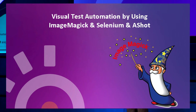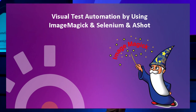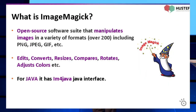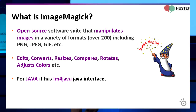The third solution is an open source combination of ImageMagick, Selenium, and AShot. ImageMagick is an open source software suite. You can manipulate images using ImageMagick — edit, convert, resize, compare, rotate, and much more. It supports several languages: Ruby, Python, C#, Java, Perl, and others. AShot is a screenshot utility developed by Yandex. You can very easily take a screenshot of an entire page or a web element using AShot.